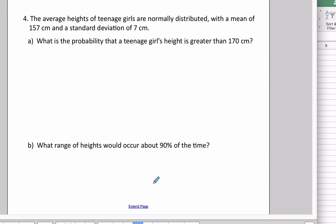In this example, we're given that the average heights of teenage girls are normally distributed with a mean of 157 centimeters and a standard deviation of 7 centimeters. The question is, what is the probability that a teenage girl's height is greater than 170 centimeters?